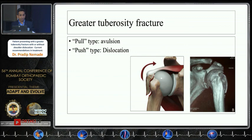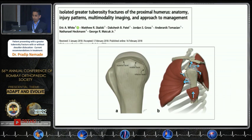Typically, greater tuberosity fractures are of two types: the pull type, which is an avulsion fracture with a small fragment, and the push type, which generally occurs in dislocation. One article identified three facets of the greater tuberosity.